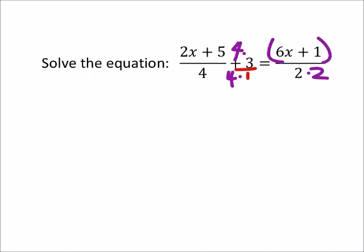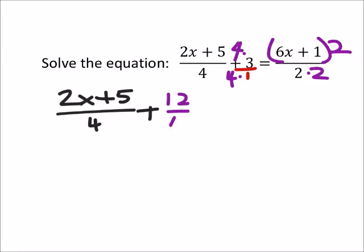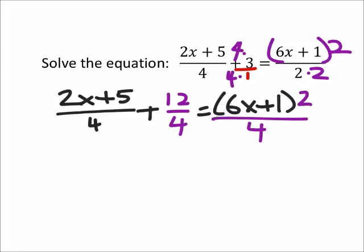And I'll multiply the two by two, and I have to multiply this entire expression by two as well. So now I've got 2x plus 5 over 4, and then we're going to add this to four times three is 12 over 4. This equals 6x plus 1 times 2 over 4. So we have our common denominators, which is what we wanted.